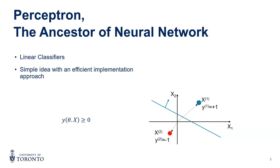A couple more points on notation. X sub one and two are two different features — sometimes called dimensions — and the superscript refers to specific examples. So here we have two data points: one is the blue circle and the other is the red circle, shown using superscript notation.